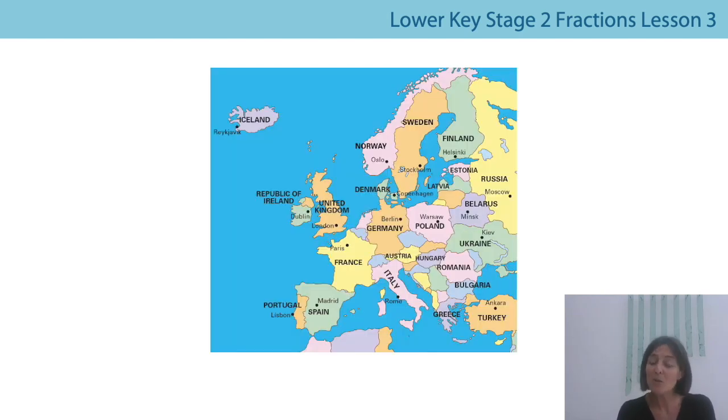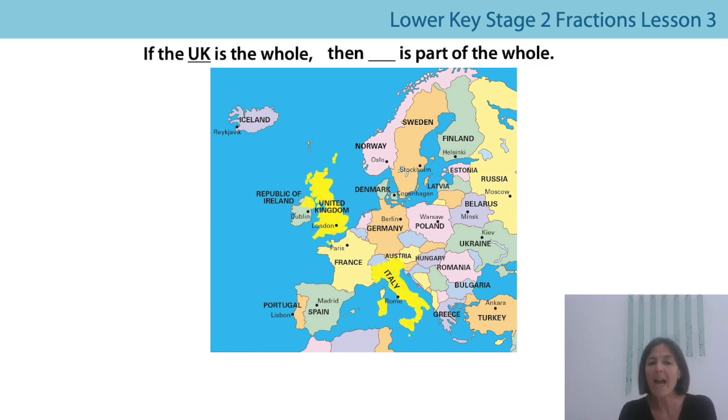Mr. East tells me that in your last lesson, you were identifying wholes and parts of whole. Let's see whether you can remember what you're up to. So if the UK is the whole, can you think of something that could be part of the whole? Let's all say it together. If the UK is the whole, then is a part of the whole. Well done.